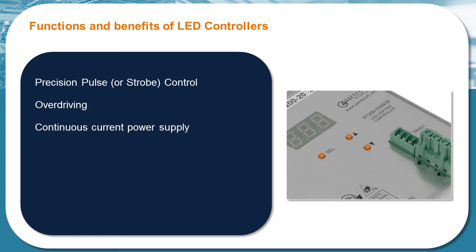Continuous current power supply. Where highly stable continuous current gives repeatable light levels for more reliable machine vision systems.